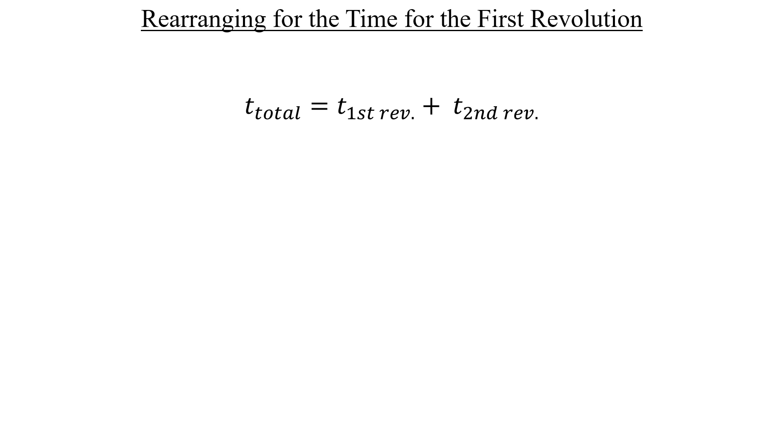Let's go ahead and rearrange this expression for the time that it takes for the first revolution alone. I'll plug in the time for the second revolution and then subtract that value on both sides. Now, we have no idea what the total time is, so we're going to have to resort to using a new equation from this chapter in order to figure that out.